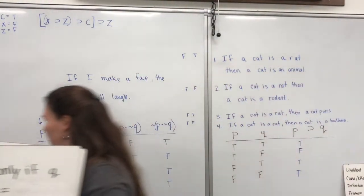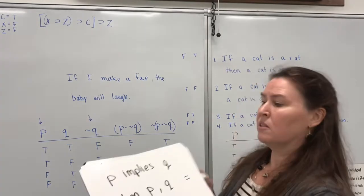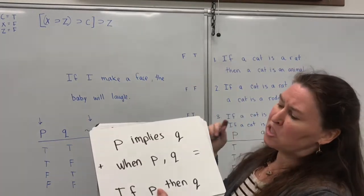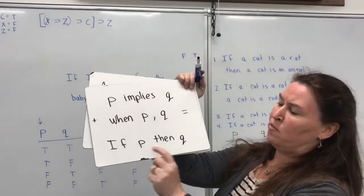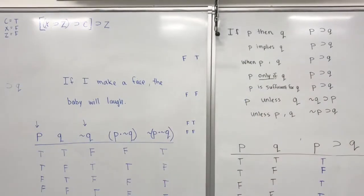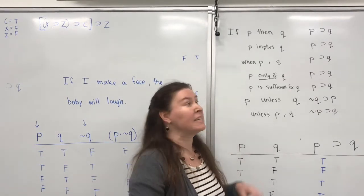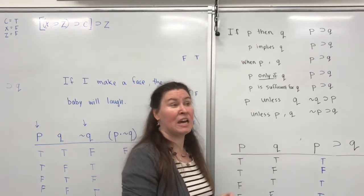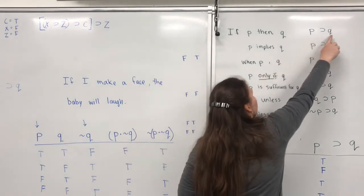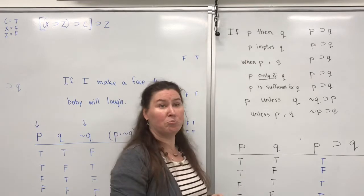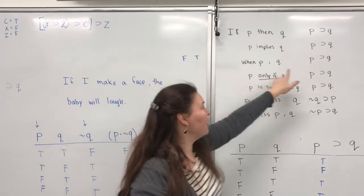Let's see another type. If you have all As, then you are smart — P implies Q. Or the promise one: when you eat your dinner, you'll get dessert — you still write it if P, then Q. If I make a face, the baby will laugh — if P, then Q. When P, Q — that's the promise one — you still write it if P, then Q. P only if Q — move the if to the front: if P, then Q. P is sufficient for Q — that's a fancy way of saying it: if the condition is met, then the consequence will happen.